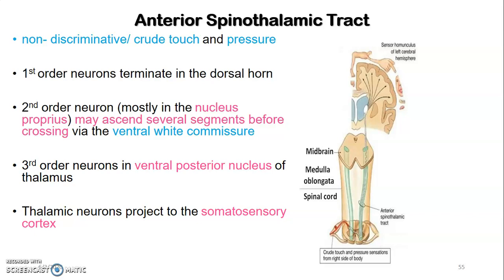The anterior spinothalamic tract carries non-discriminatory or crude touch and pressure. The first-order neuron terminates at the dorsal horn. The second-order neuron may ascend several segments before crossing via the ventral commissure — for example, if information enters at T1, the second-order neuron may ascend to T2 or T3 before decussating. Both anterior and lateral spinothalamic tracts cross at the anterior ventral commissure. The anterior spinothalamic tract ascends in the anterior column, while the lateral spinothalamic tract ascends in the lateral column of the spinal cord's white matter.